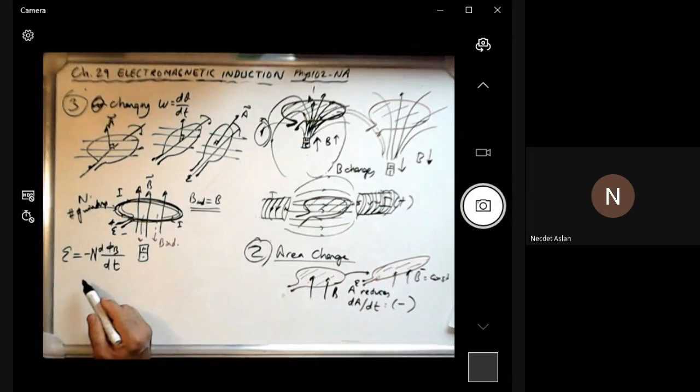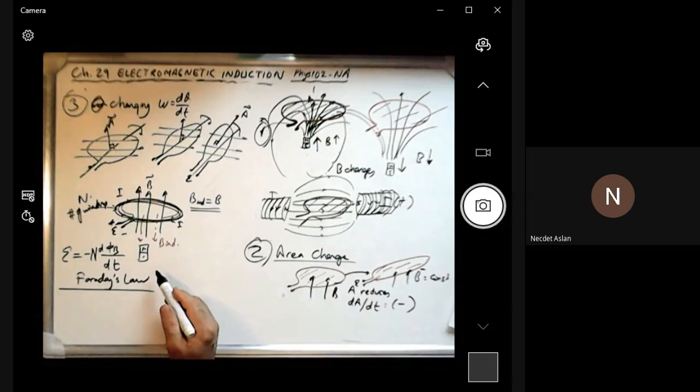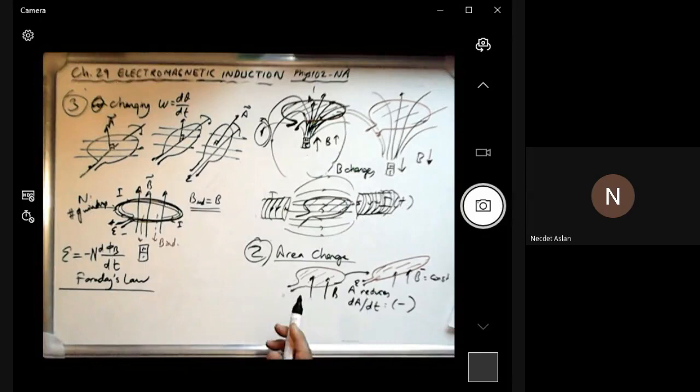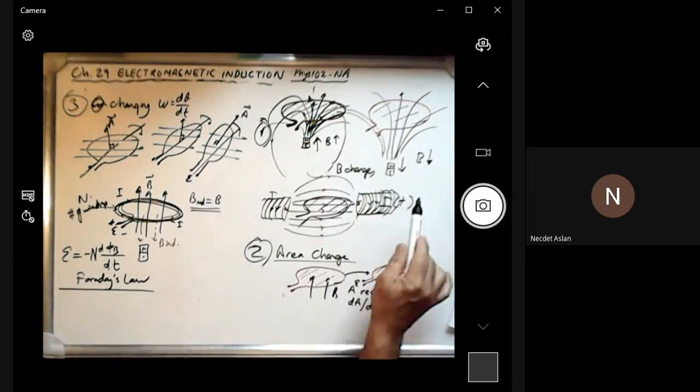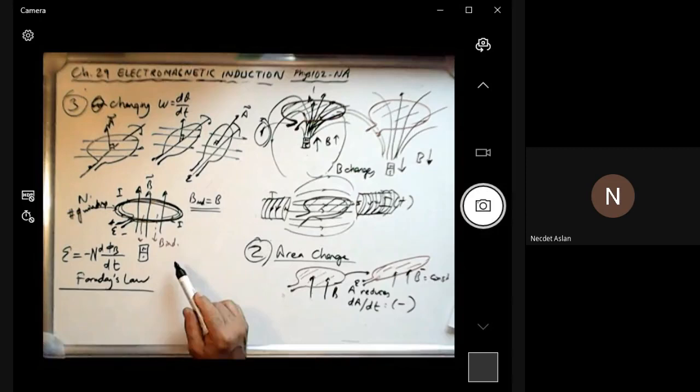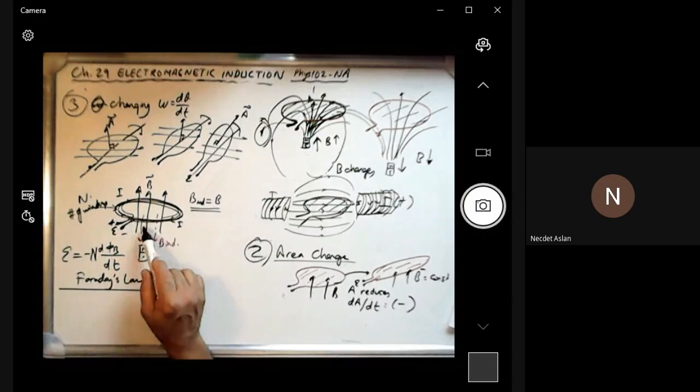So the potential difference is directly related to the number of windings. This is called Faraday's law, which explains how electricity is created. There are a few options, of course: the direction you are moving the magnet, whether the magnetic field intensity is increasing or reducing, whether the area or the angle is changing. Everything specifies the direction of the current and also the polarity of the electromotive force.